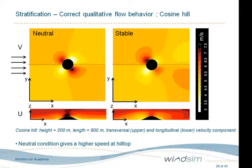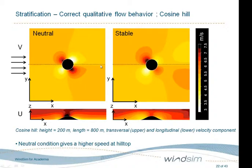We reran the cases and looked at alternative turbulence models. For the Bolund experiment we could see that the K-Omega model apparently reproduced the level of turbulence better than the standard K-Epsilon model. On atmospheric stability: I have already shown an example of stability. Here is another one that shows the qualitative behavior of flow when it passes over a cosine hill.